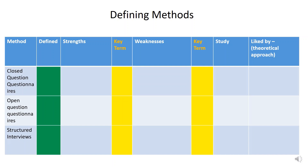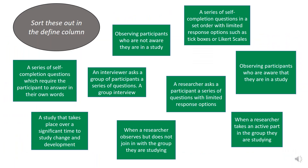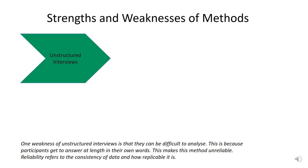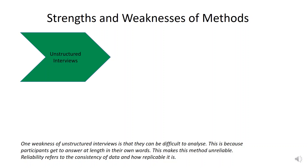The next bit we've got to look at is how to define these methods. I've put some definitions here and I want you to sort them into that first column so you have a clear definition for each method. For strengths and weaknesses, for each method you need to understand two strengths and two weaknesses — these are advantages and disadvantages. The key thing is to use those golden key terms to explain why they are a strength or a weakness.